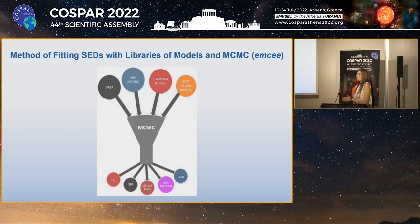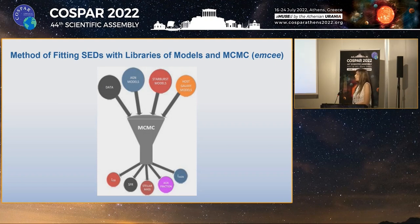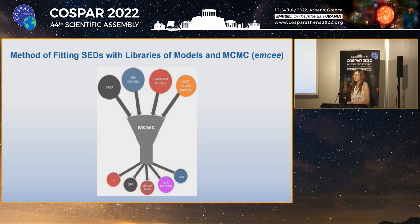This figure shows how we use MCMC in our method. We have the data and our three libraries of models. We feed them into the MCMC code, which is emcee in our case, and we become able to derive physical quantities such as the stellar mass, the star formation rate, the starburst timescale, the AGN fraction, dust masses, and the luminosities of each component as well as the total luminosity.